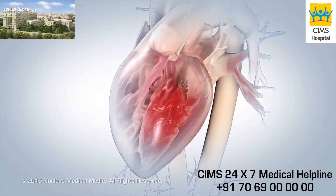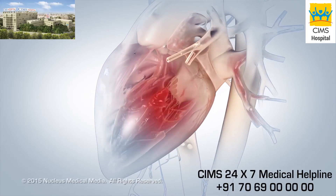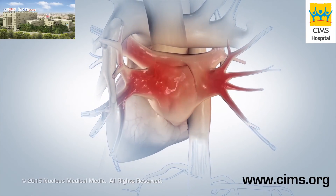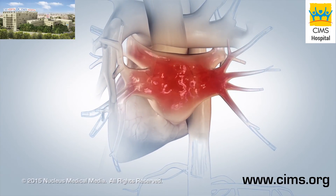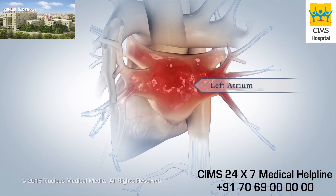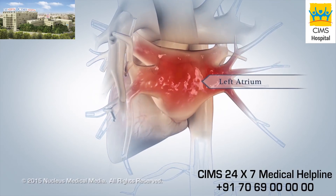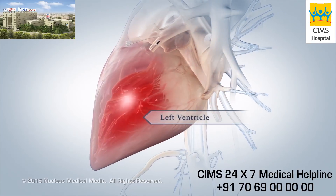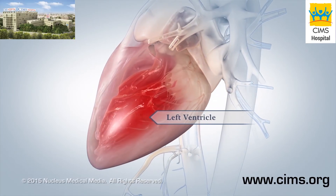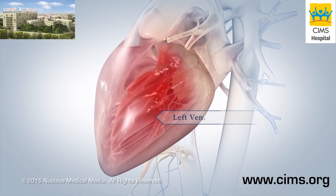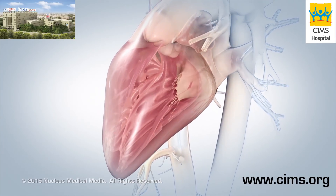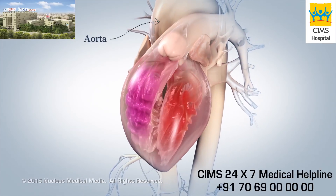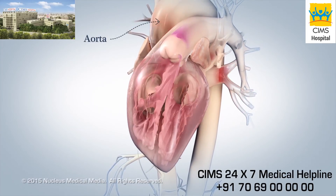On the left side of your heart, oxygen-rich blood from your lungs flows through your pulmonary veins into your left atrium. The blood then moves into your left ventricle, which contracts and sends blood out of your heart, through the aorta, to feed your cells and tissues.